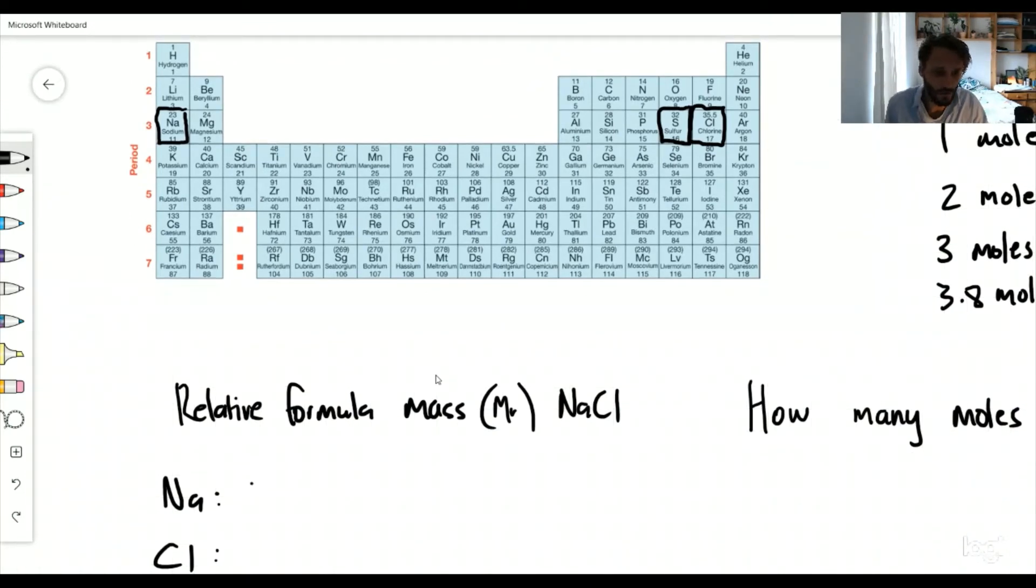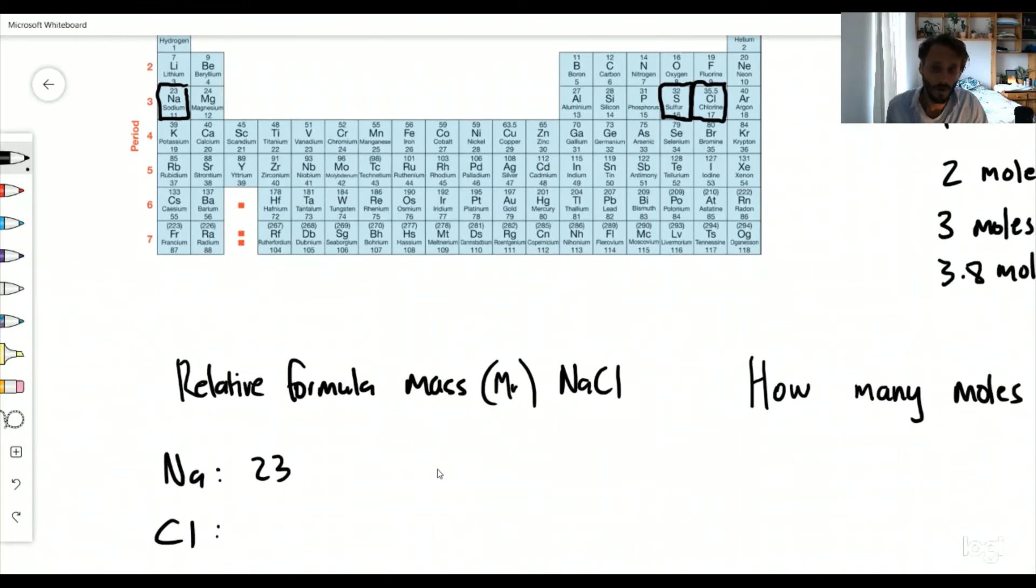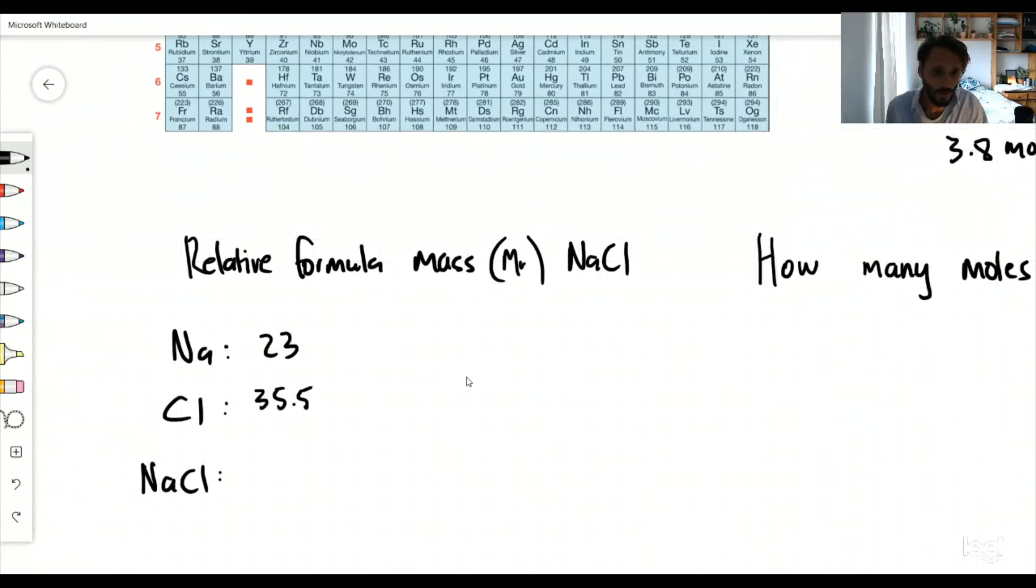We've got 23 grams, that's one mole of sodium, and we've got 35.5 grams for chlorine. So when we're talking about sodium chloride, you just plus these two together. 23 plus 35.5 is going to give me 58.5 grams.